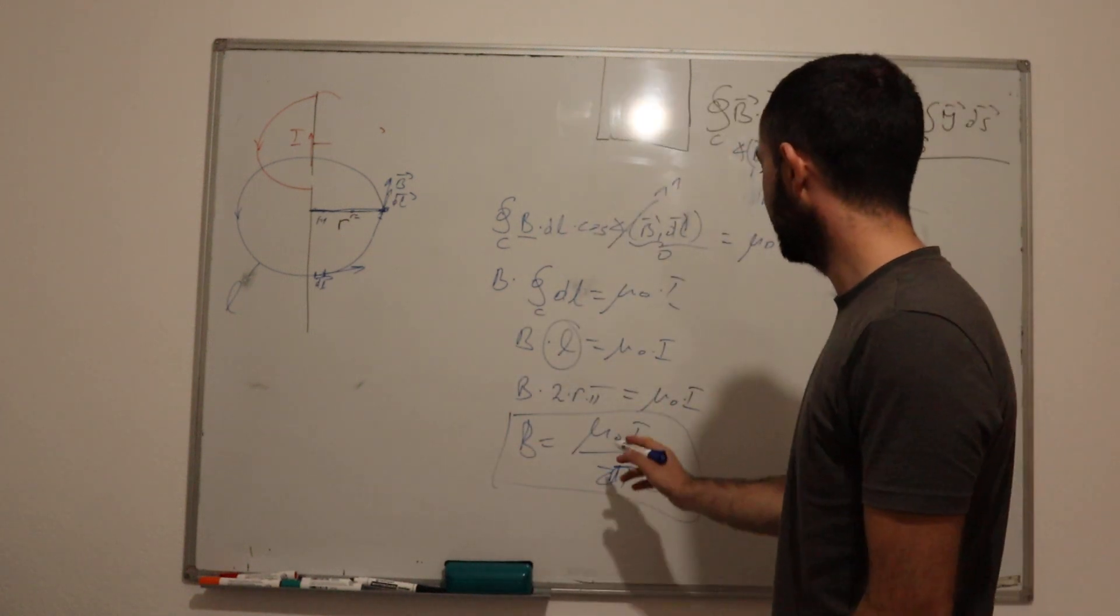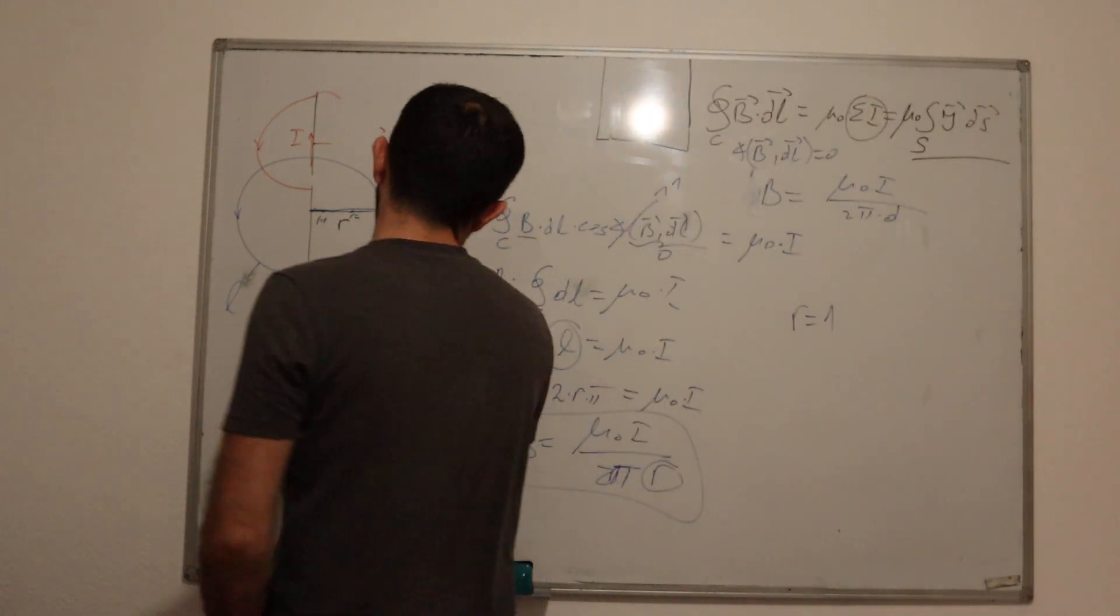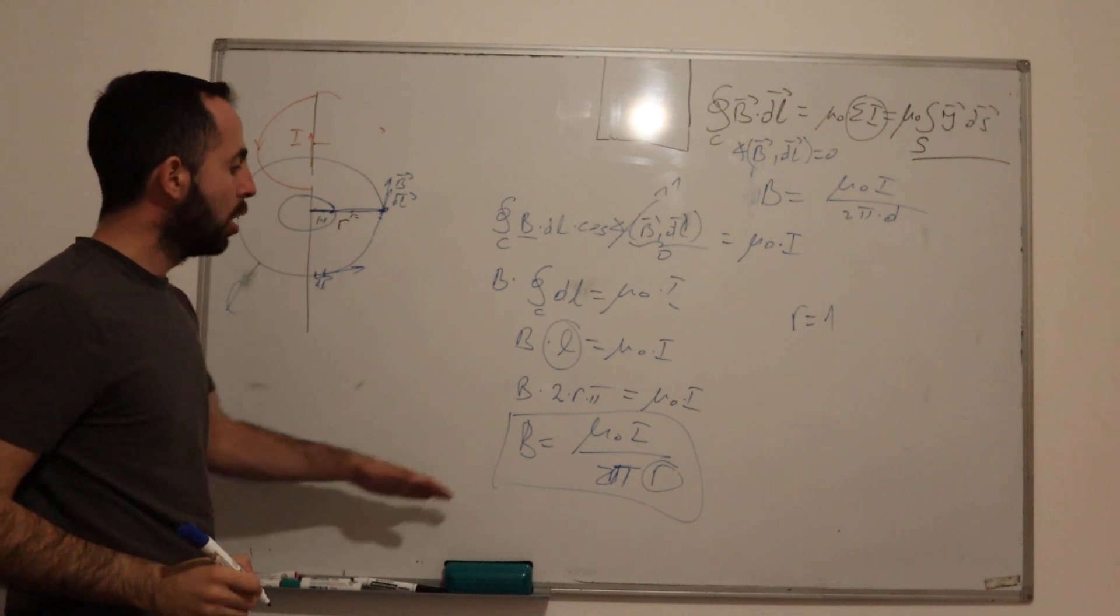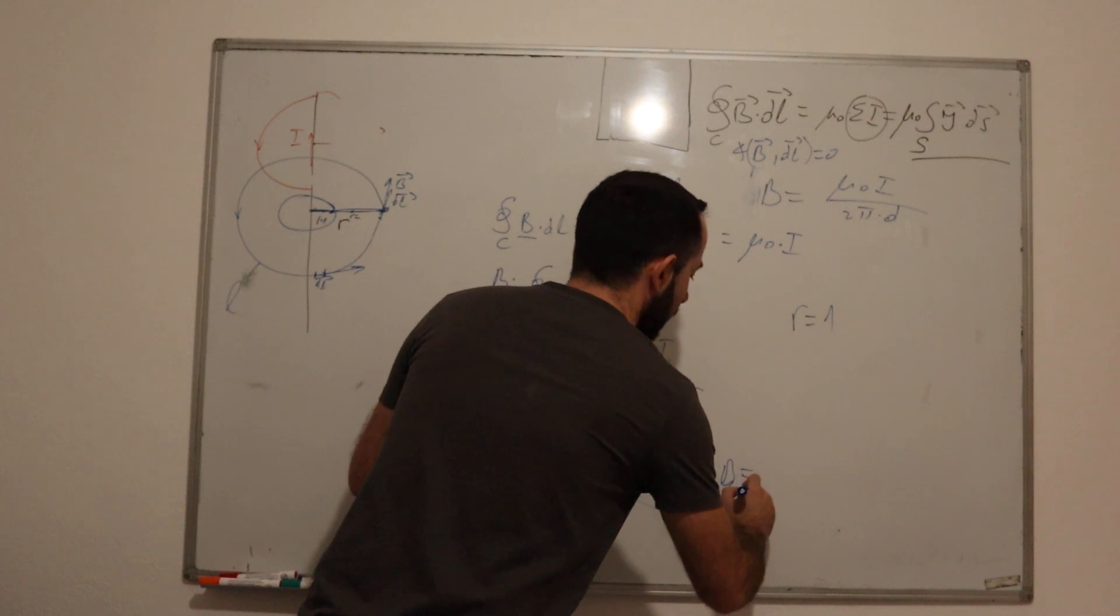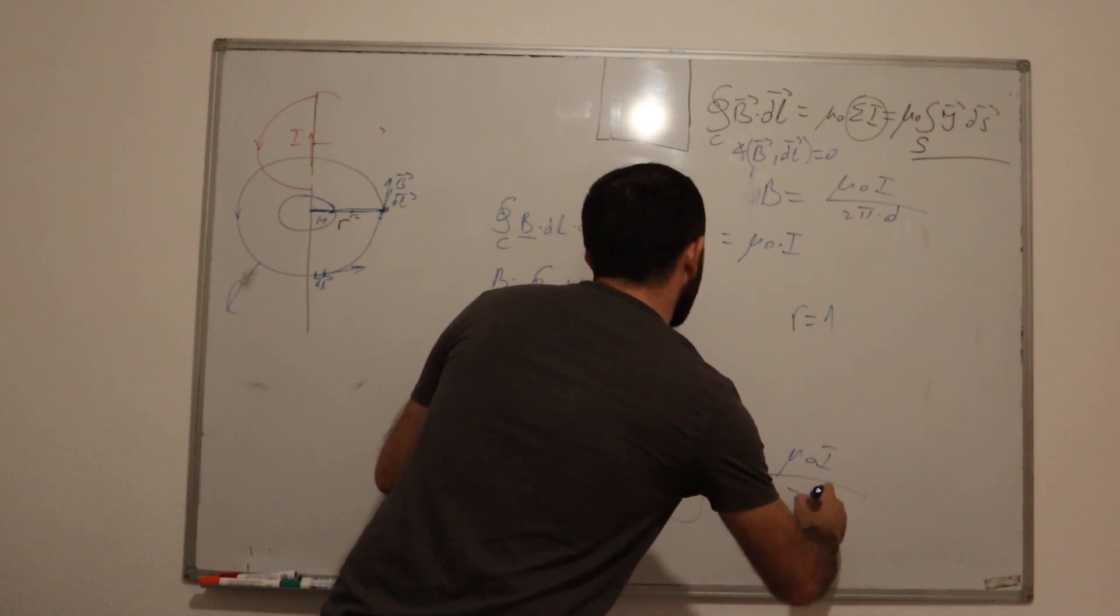So if we want to calculate our magnetic field for R equal to 1, we want to calculate it here. We have the uniform formula, which means that B at R equals 1 is equal to μ₀I/2π.